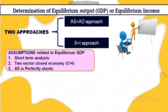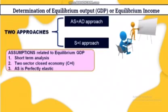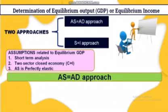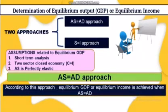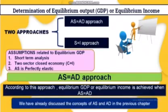The first assumption is short-term analysis — we will focus on the short-run, not the long-run. We will have a two-sector closed economy, that is C plus I. The AS curve is perfectly elastic, meaning it is a straight line. According to the AS-AD approach, equilibrium GDP and equilibrium income is achieved when AS equals AD — when aggregate supply and demand meet, we achieve an equilibrium point.